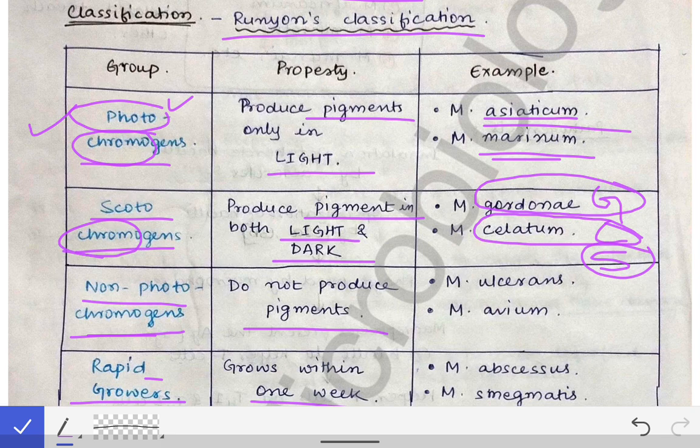For non-photochromogens: suppose you have an ulcer — you would not go and take a photo of that ulcer. So non-photochromogen means no photo, which points to M. ulcerans. Another example is M. avium.